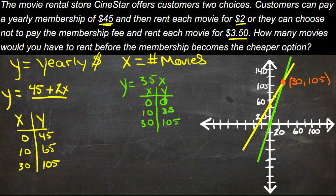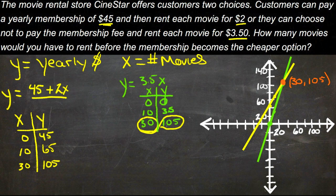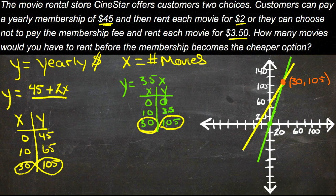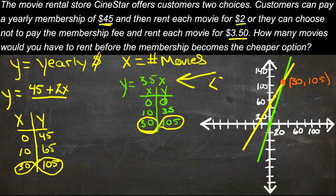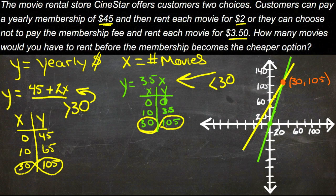If we graph those two equations, we can see they both hit the point (30, 105) — at 30 movies, both options cost $105. That's the turnaround point. If you rent fewer than 30 movies, it's cheaper to go with no yearly fee and pay per movie. If you rent more than 30 movies, it's cheaper to pay the yearly fee. And if you rent exactly 30, it doesn't matter — either option costs the same.